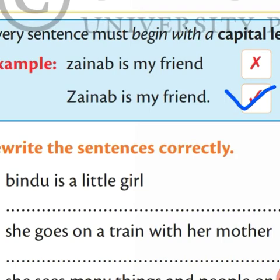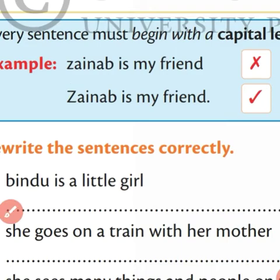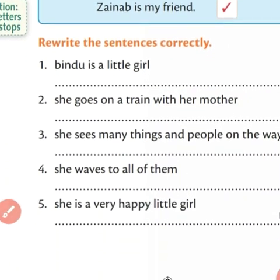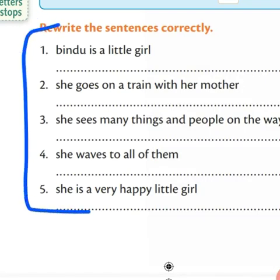If you write the first letter capital but do not give a full stop at the end of the sentence, the sentence will be wrong. Similarly, if you give a full stop at the end but do not start the sentence with a capital letter, the sentence will be wrong too. I hope you solved this exercise. Most of the students, MashaAllah, solved the exercise. Students who did not solve will solve today. Students who solved but have some corrections should check their sentences and make corrections.